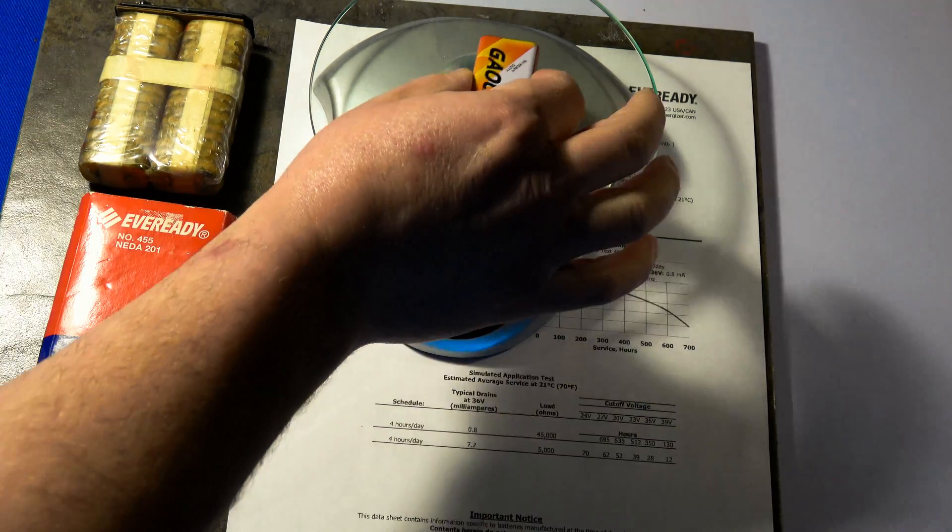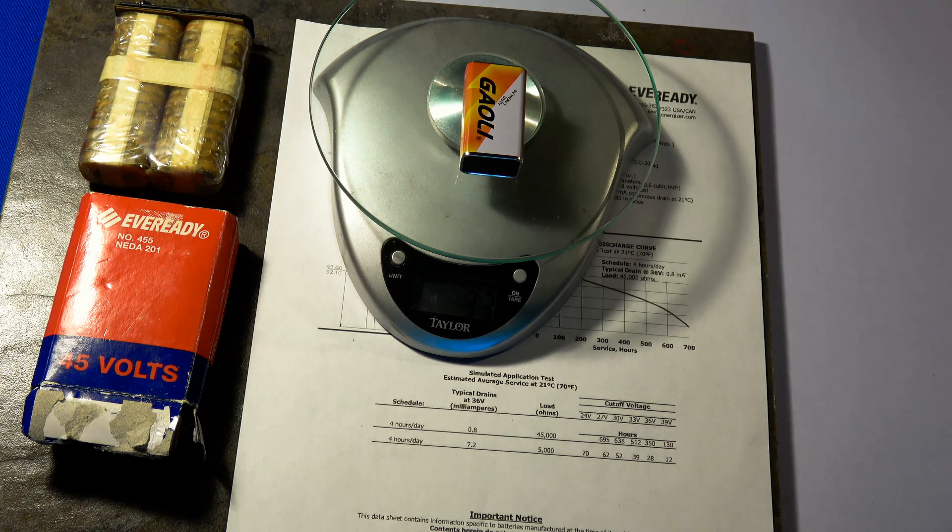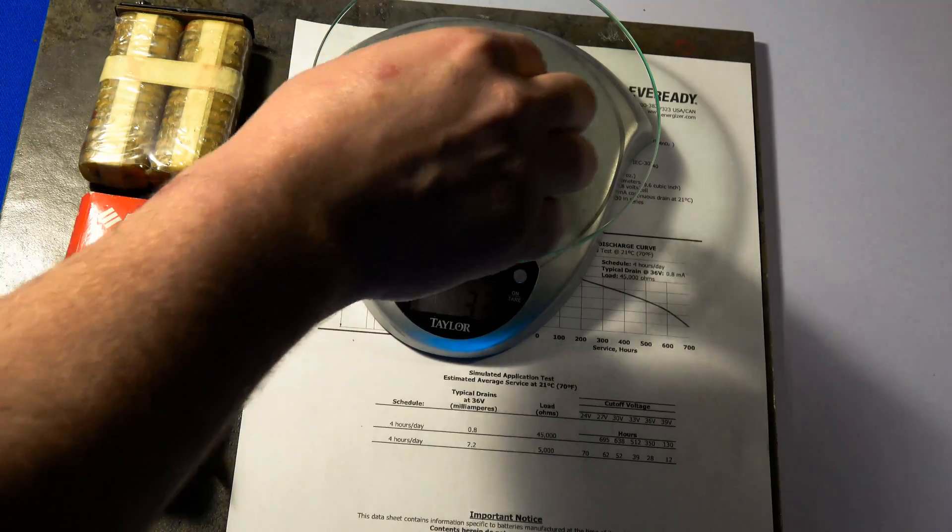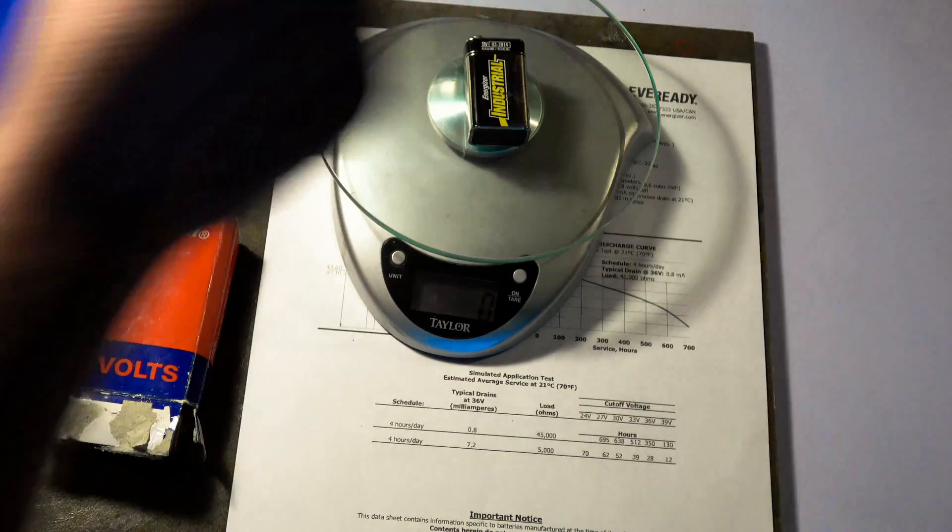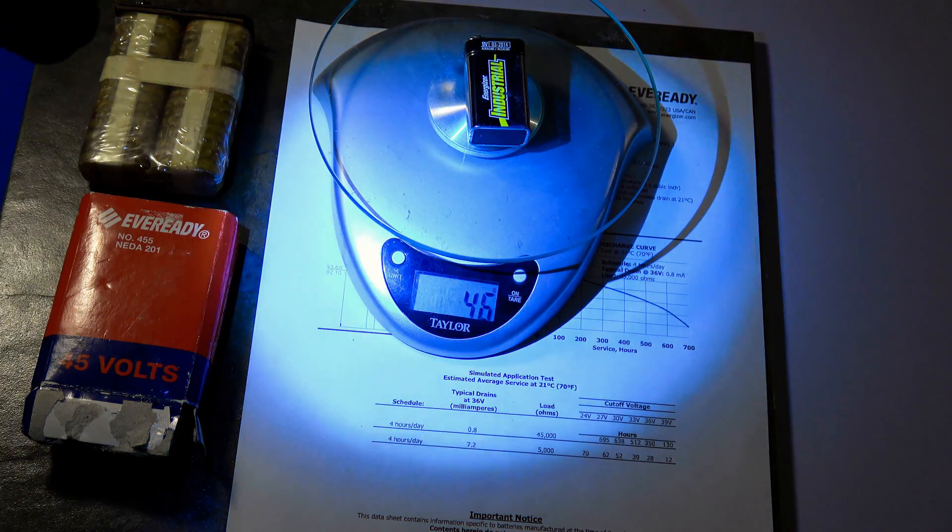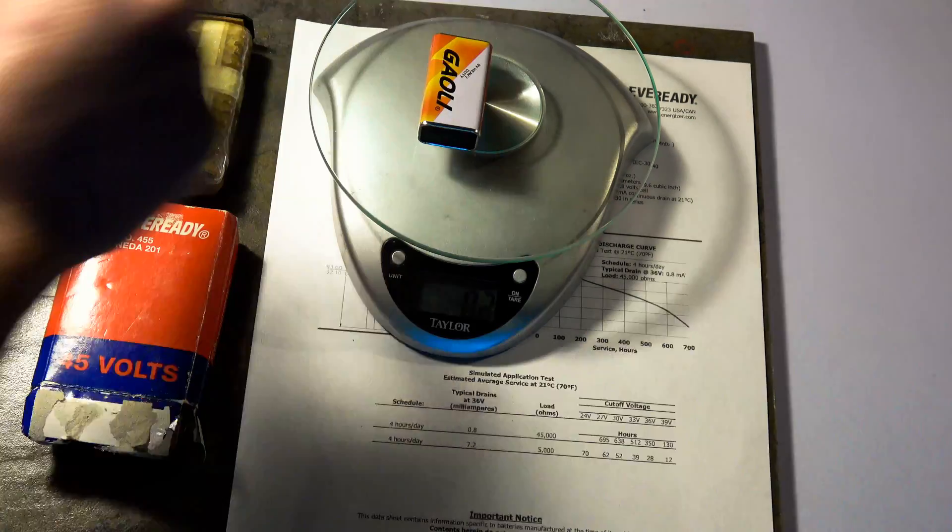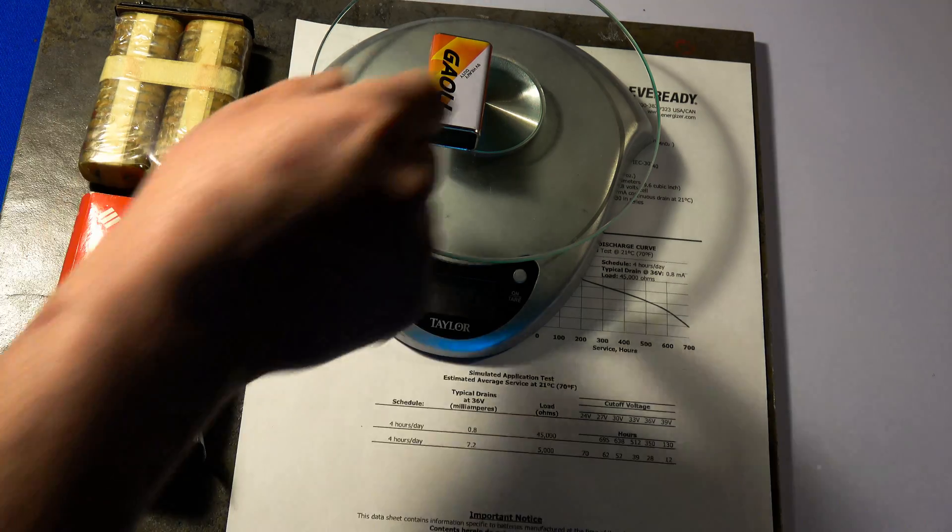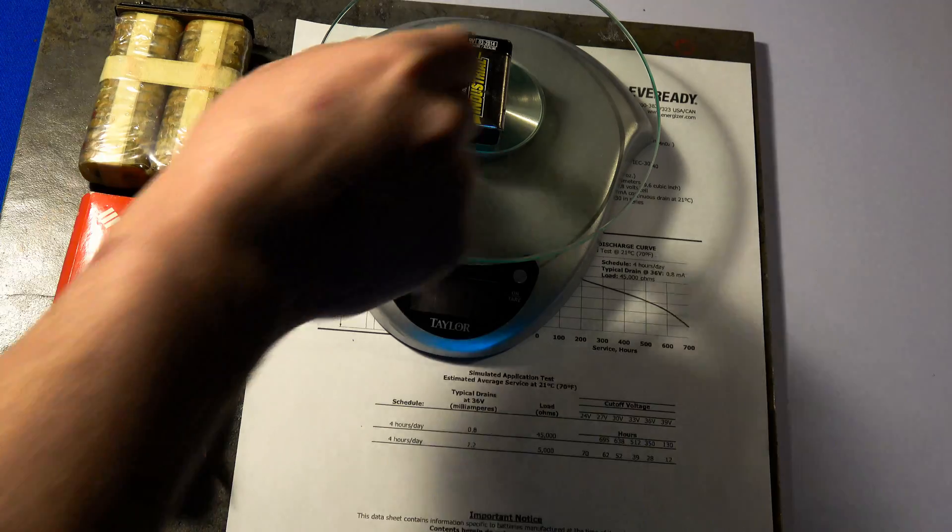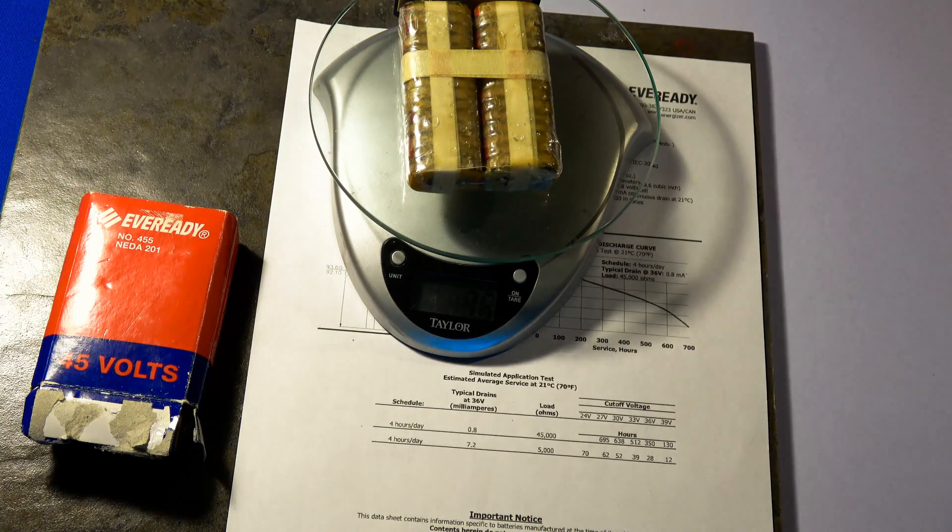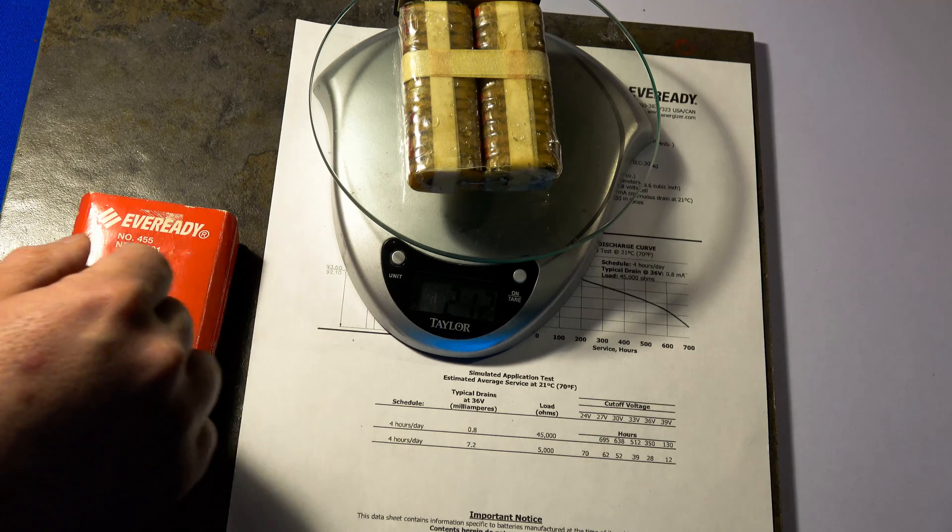Switch to grams. Carbon-zinc. 3.3 grams for the carbon-zinc. The alkaline is 4.6 grams. So the alkaline is quite a bit more energy-dense, but they also cost more. As a comparison, 7.5 ounces or 212 grams.